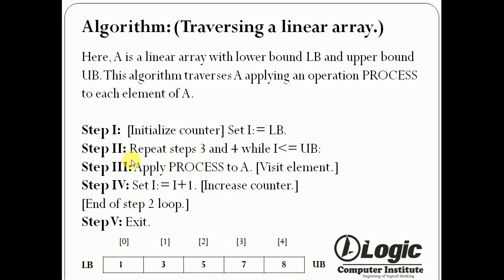This algorithm traverses array A, applying an operation PROCESS to each element of array A. So step first is initialize counter: set i equal to LB. That is, the counter is set to the lower bound element, that is 1.